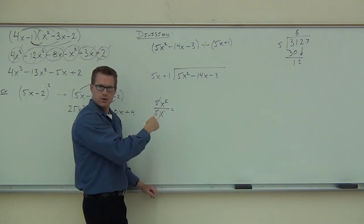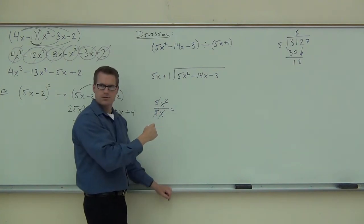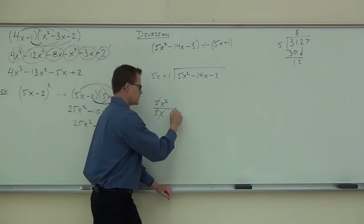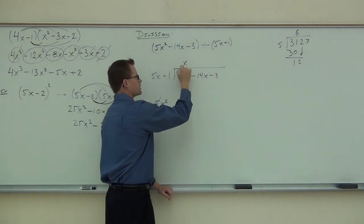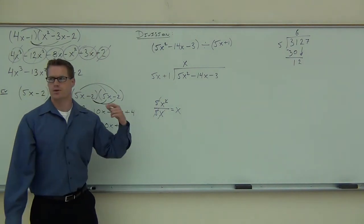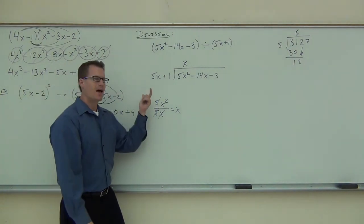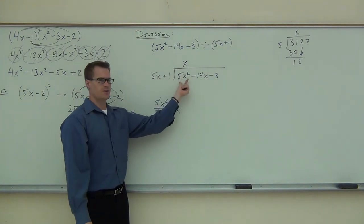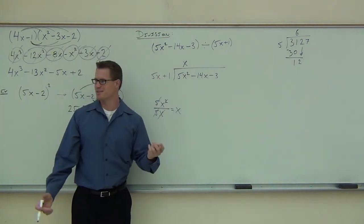x is going to go here. It's kind of weird to think of, but you go, oh, how many times does 5x come to 5x²? It goes in x times. Isn't that strange? That's interesting. But that happens. I mean, we're dividing this term by that term.